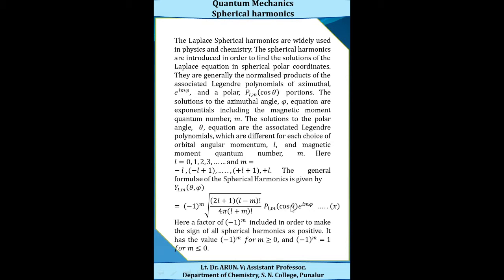The solutions to the azimuthal angle (φ) equation are the exponentials, including the magnetic quantum number m. The solutions to the polar angle (θ) equation are the associated Legendre polynomials, which are different for each choice of a particular orbital angular momentum quantum number l and a particular magnetic quantum number m.